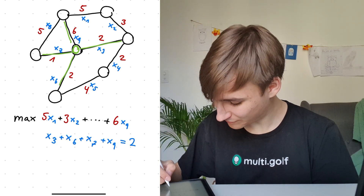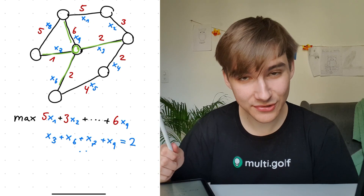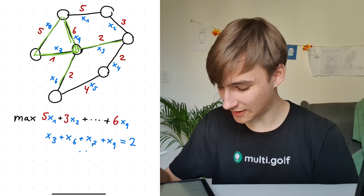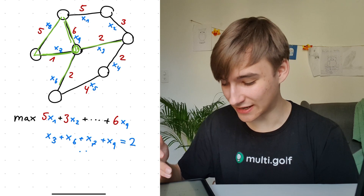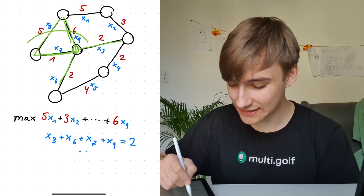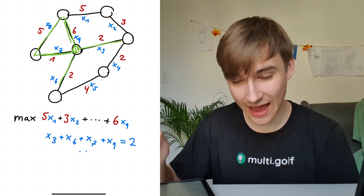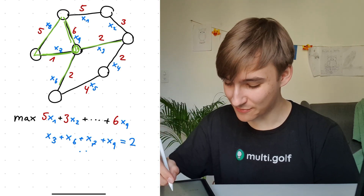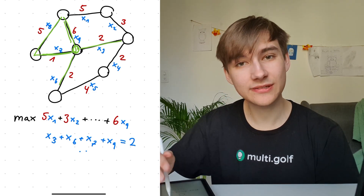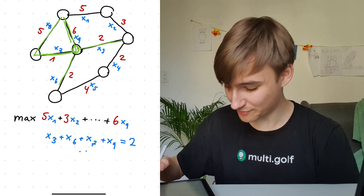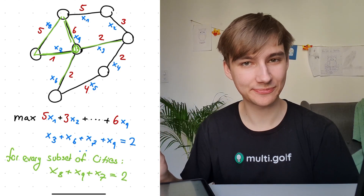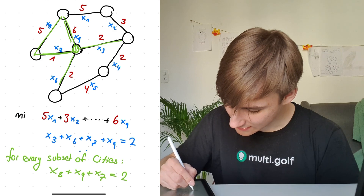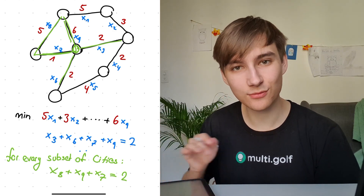We do this degree constraint for every stop. We also want to avoid subtour cycles - for example, a situation where three cities are connected to each other but not to any other cities. To prevent this, for every subset of cities that isn't all cities, the total number of active connections within that subset must equal the number of cities in that subset minus one. For example, x8 + x9 + x7 must equal 2, because with 2 you can't form a cycle. If we do this for every subset, no cycles can exist. And of course, we want to minimize the function rather than maximize it. The solution to this linear program is exactly the traveling salesman problem - amazing.